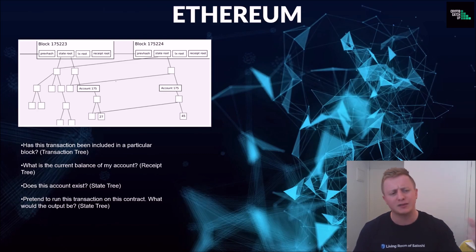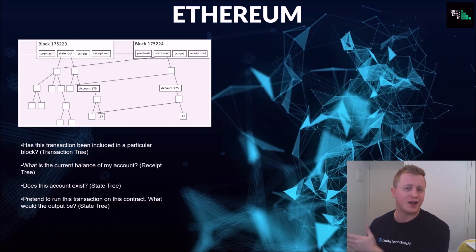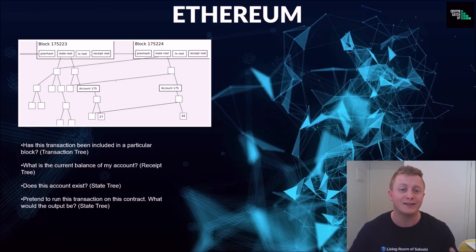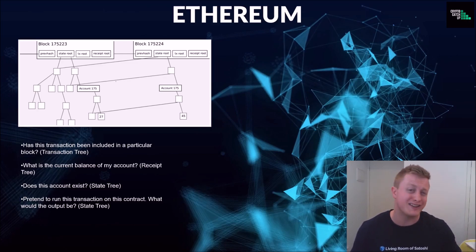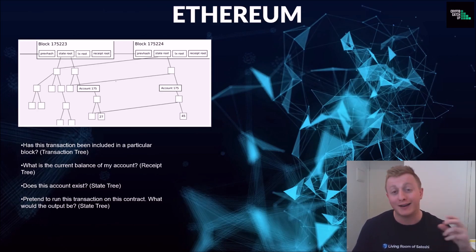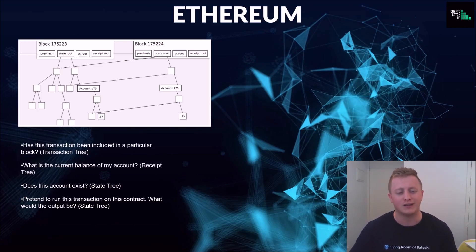Here are some example queries: has this transaction been included in a particular block? We would check the transaction tree for that. What is the current balance of my account? This is something Bitcoin can't do — that is stored within the receipt tree. Does this account even exist? That's in the state tree. And can we pretend to run this transaction — some form of automation to test something? That's like a Merkle proof but slightly different, and it enables them to spool up an SPV node and check that by using a state tree.